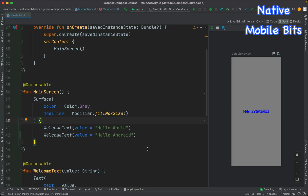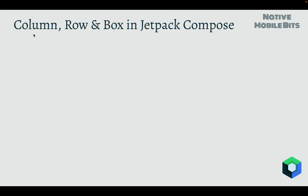The answer is very simple. Inside Jetpack Compose we have three inbuilt composables: Column, Row, and Box. Using these we can put multiple children composables in any specific orientation. These three composables exactly behave like LinearLayout with vertical and horizontal orientation, and Box behaves like FrameLayout.